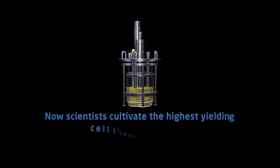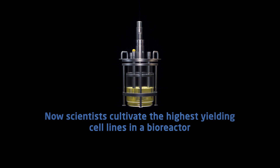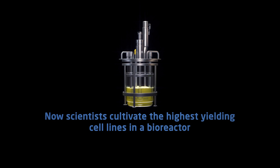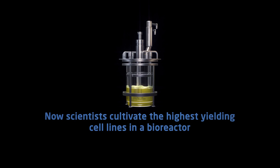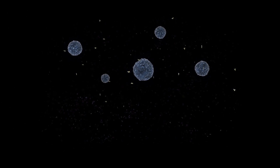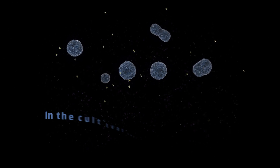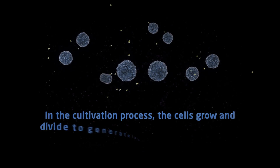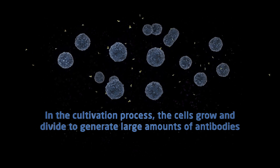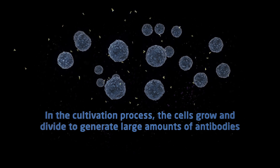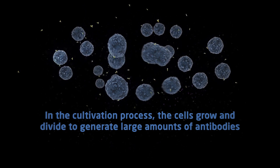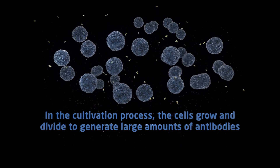Now, scientists cultivate the highest yielding cell lines in a bioreactor. In the cultivation process, the cells grow and divide to generate large amounts of antibodies.